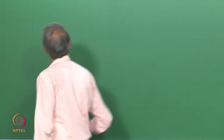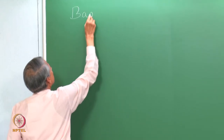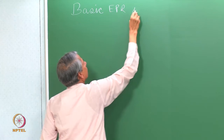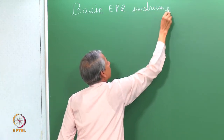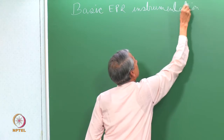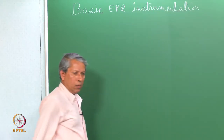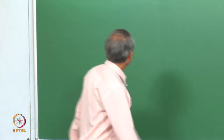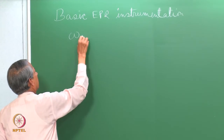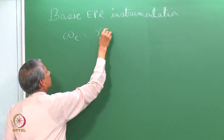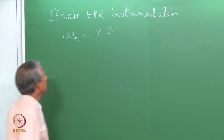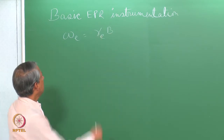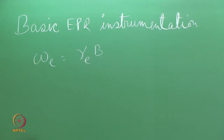Today we are going to discuss the basic EPR instrumentation — the items used to make an EPR spectrometer. We have seen in the earlier lecture that the Larmor frequency of an electron is given by the gyromagnetic ratio of the electron, the magnetic field, and the frequency of precession.